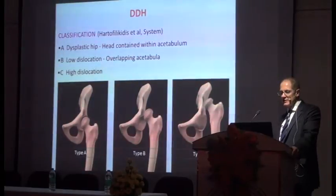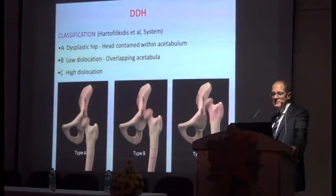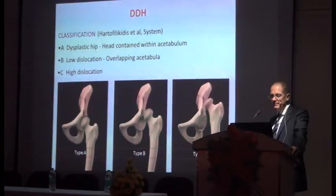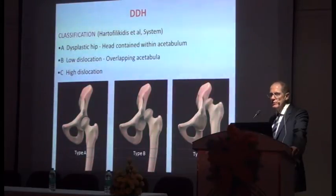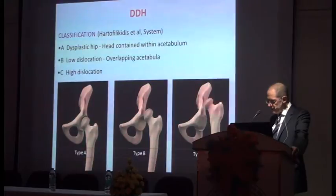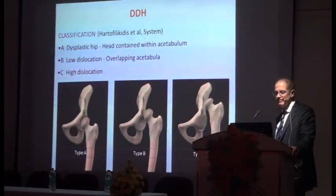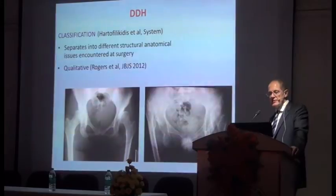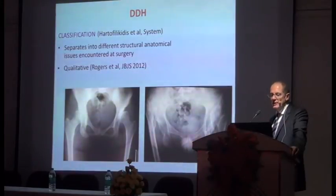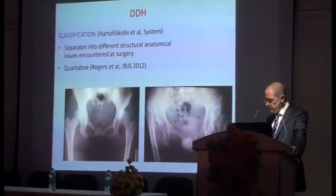Another classification is the Hartofilakidis classification. Type A is a dysplastic hip where the head is contained. Type B is an overlapping acetabulum where you've got to bring the head down but there's acetabulum to work with, which would normally need augmenting. Type C is a high dislocation where the acetabulum exists but is undeveloped because it hasn't been stimulated by the presence of the femoral head. This classification separates into different structural anatomical issues encountered at surgery, making it a more qualitative and in many ways more useful classification.